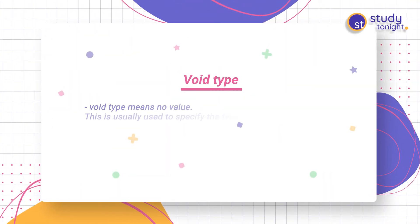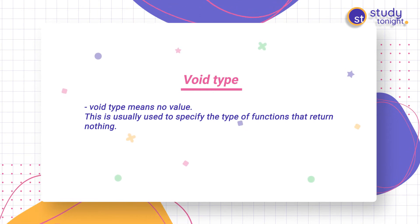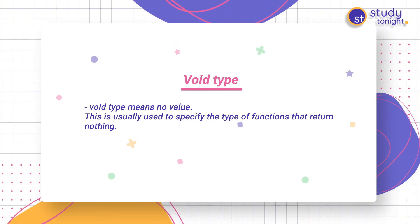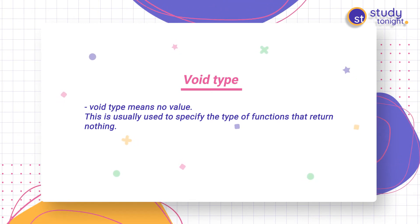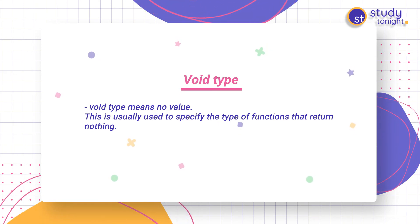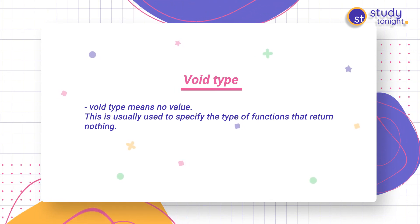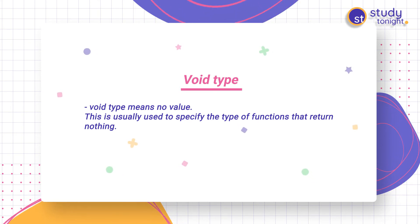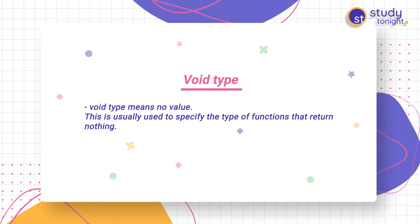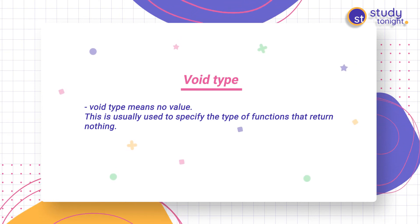Now, void type — what is the void type? Basically, when we are not giving any value, void type means no value. This is usually used to specify the type of functions which return nothing. We will get acquainted with this data type as we start learning more advanced topics in C language, like functions and pointers. We can use void with main as well, and we do not need to return any value because void does not take any value. We can simply skip that return statement.